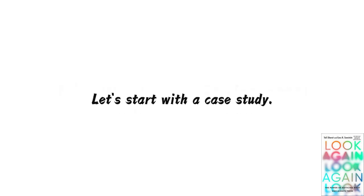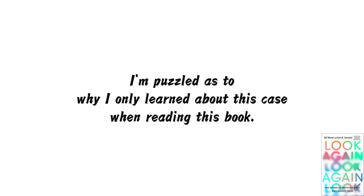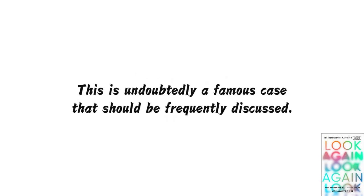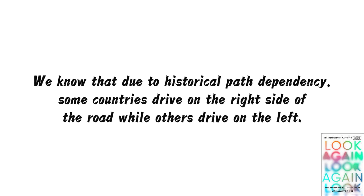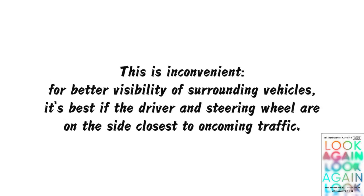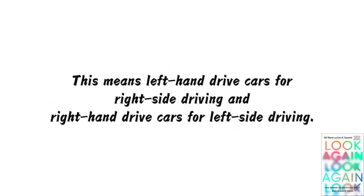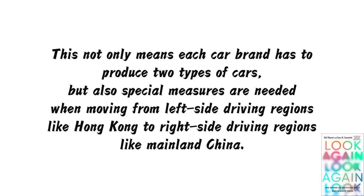Let's start with a case study. I'm puzzled as to why I only learned about this case when reading this book — it's undoubtedly a famous case you won't forget once you hear it. Due to historical path dependency, some countries drive on the right side of the road while others drive on the left. This is inconvenient. For better visibility of surrounding vehicles, it's best if the driver and steering wheel are on the side closest to oncoming traffic, meaning left-hand drive cars for right-side driving and right-hand drive cars for left-side driving. This not only means each car brand has to produce two types of cars, but also special measures are needed when moving from left-side driving regions like Hong Kong to right-side driving regions like mainland China.